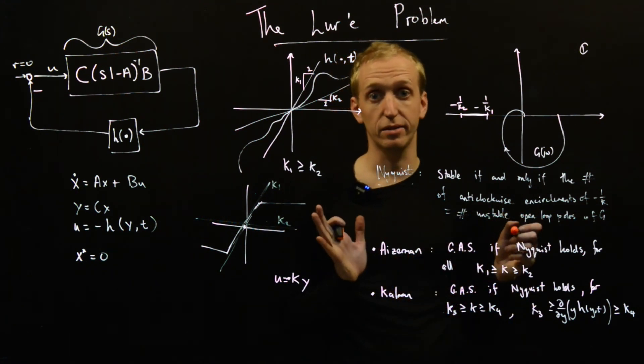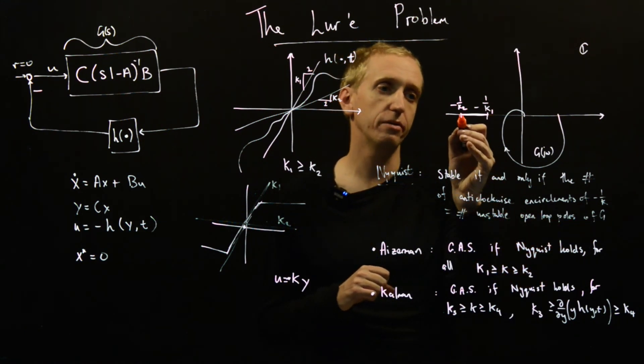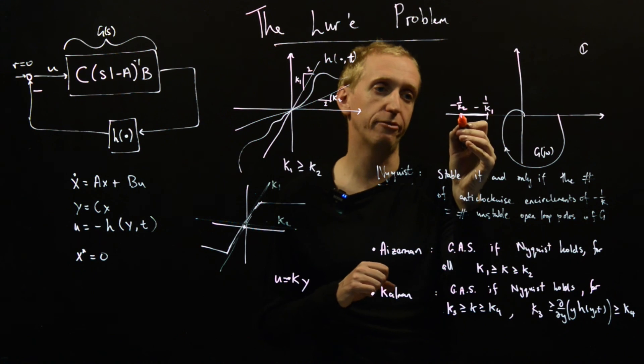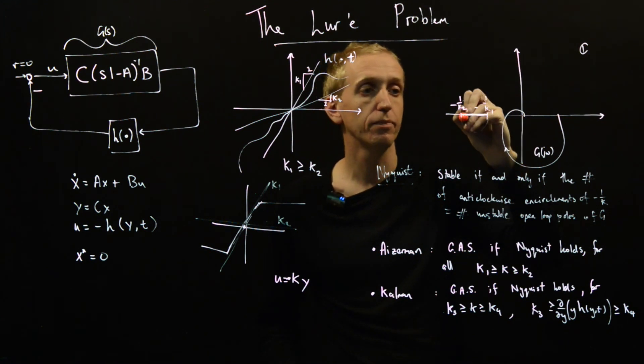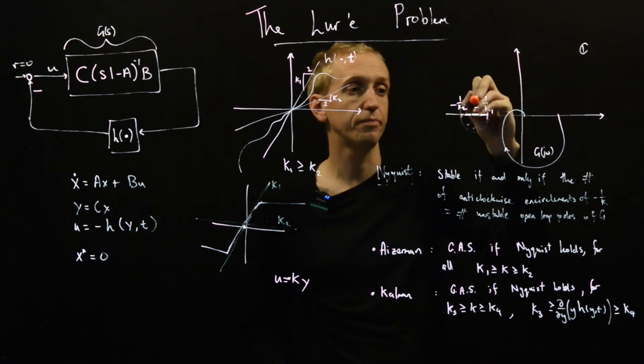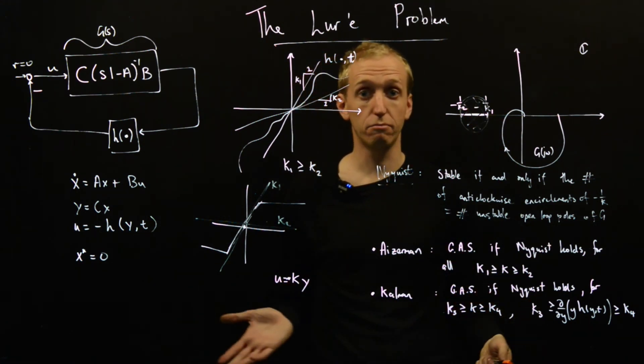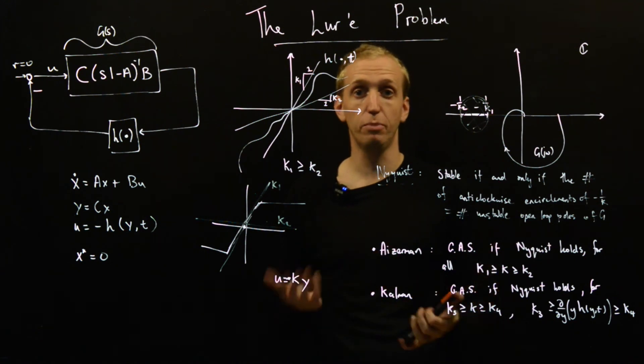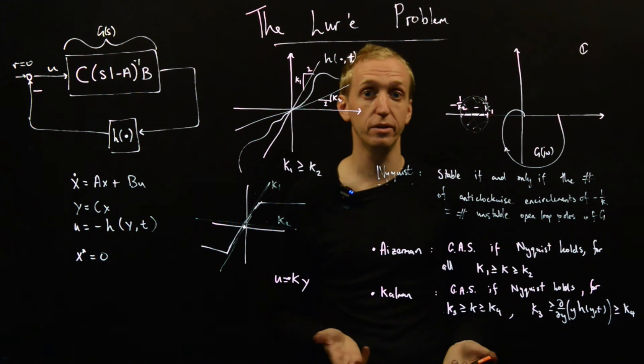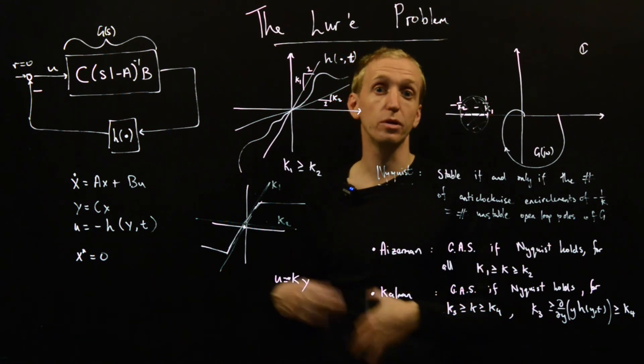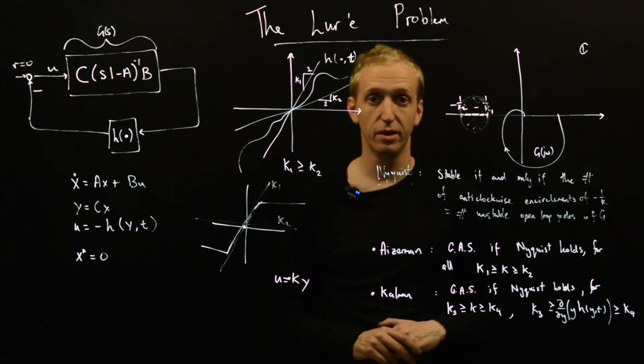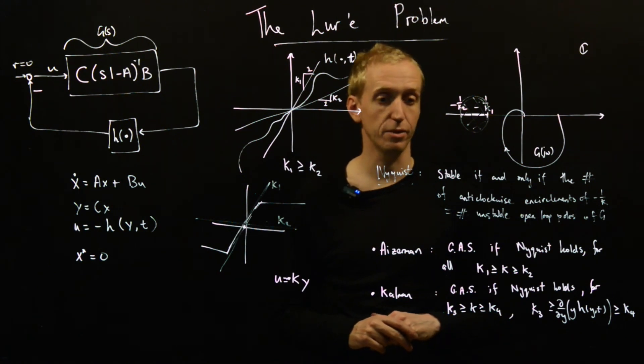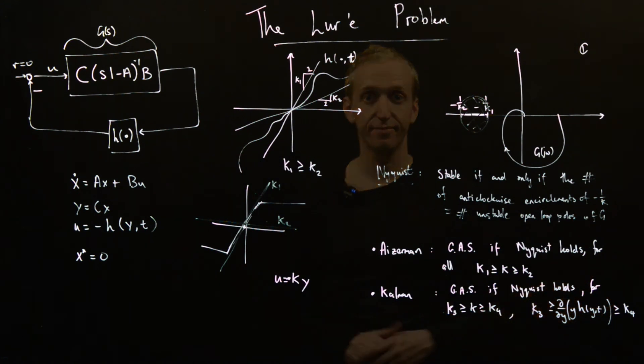And the version that is correct, and this is what we're going to be exploring today, is rather than checking the Nyquist criterion for a range of minus 1 over k points along this line segment, you actually have to check it for a circle instead. And that's what we're going to talk about today. We're going to give some examples of what this means, and this condition is called the circle criterion. So we'll go into this in a little bit more detail, and we'll use the Lyapunov arguments from before to give a kind of informal sketchy proof for why that's true. So today it will be the circle criterion. Thank you. Okay.